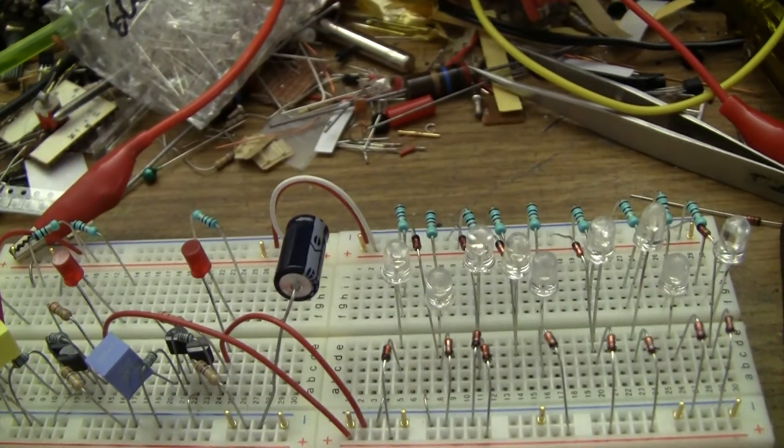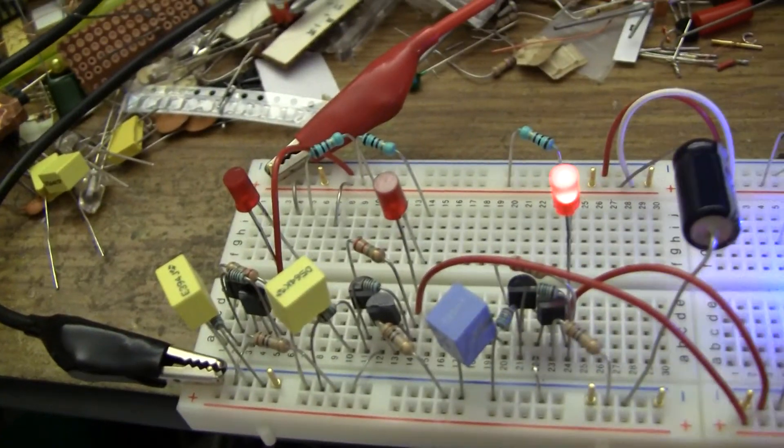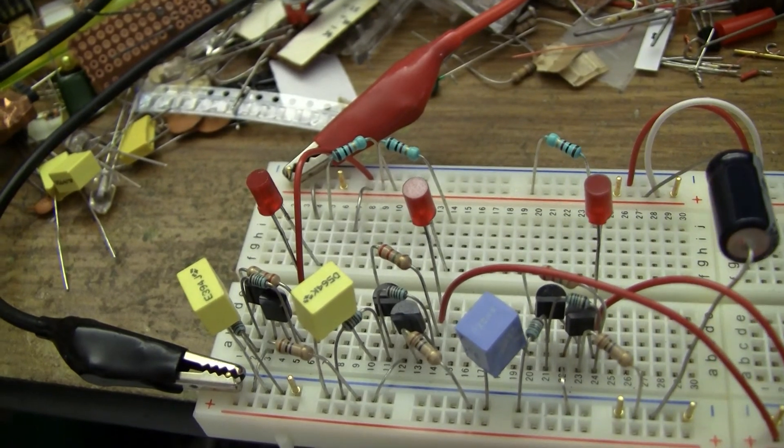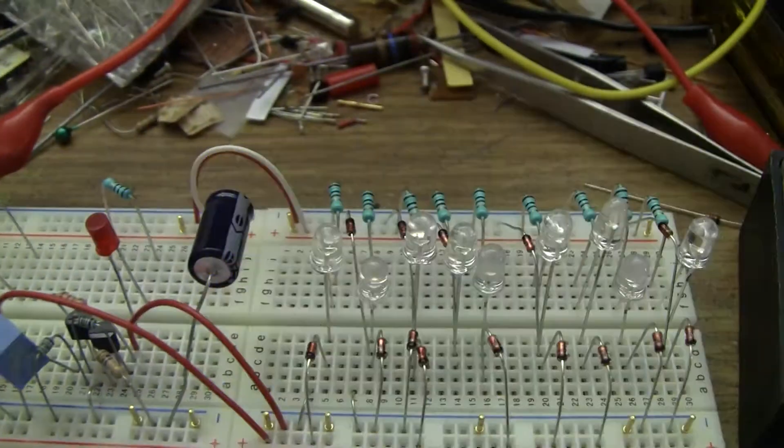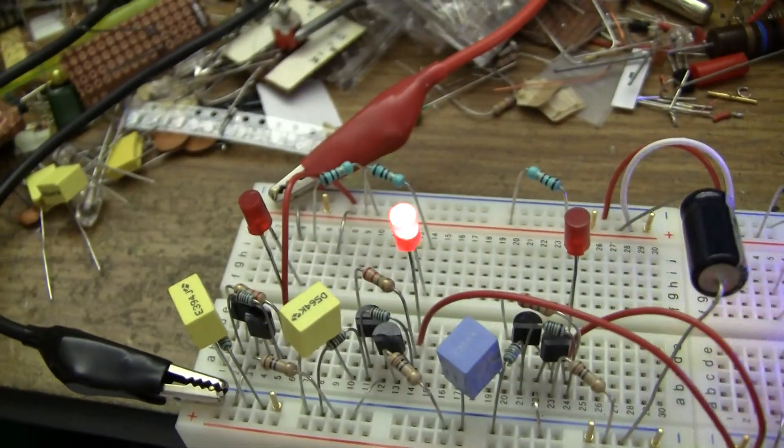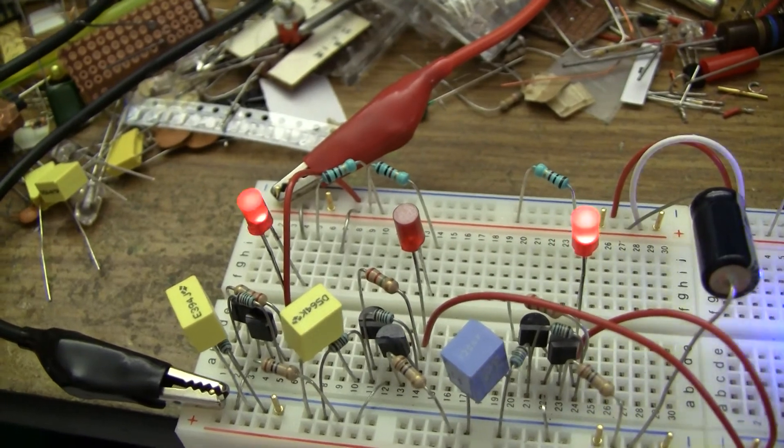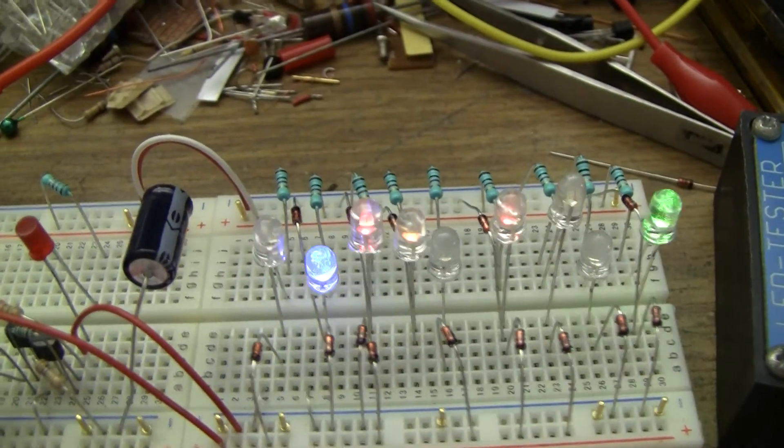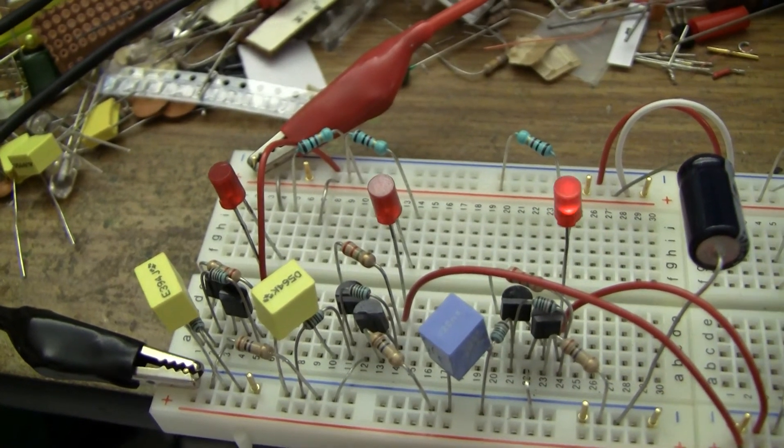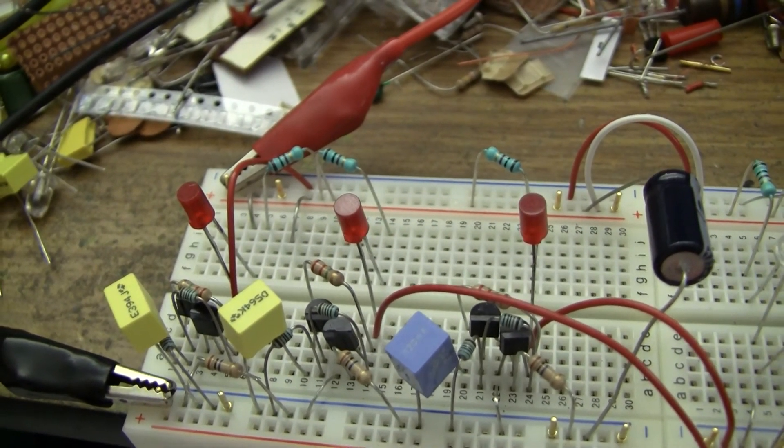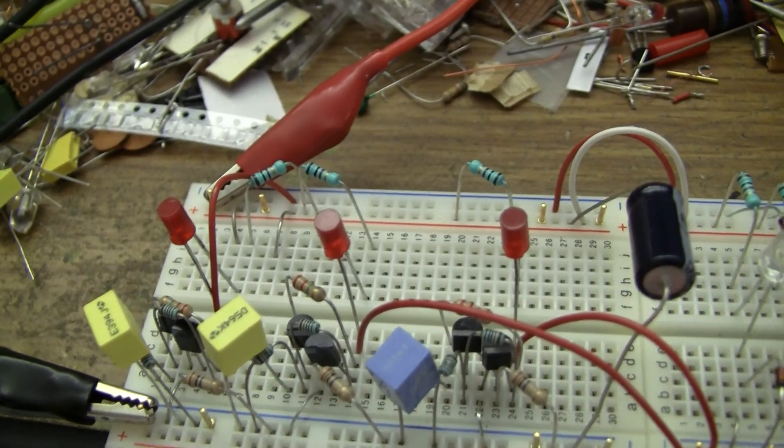You can see if I vary the voltage, in fact it's more obvious on the oscillators, it gets a little bit faster and obviously a lot brighter because I'm not changing the current limiting resistance. That's running off about 20V now, and if I lower it they get dimmer and the whole thing stops around about 5V. Yeah, about 3V.